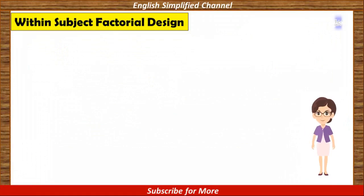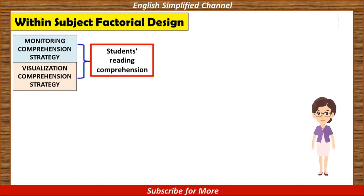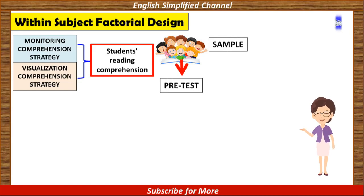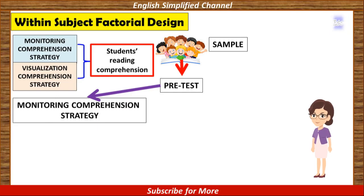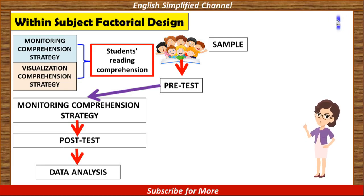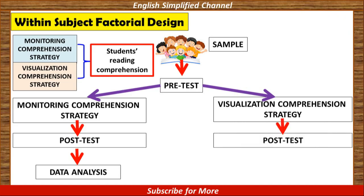Within-subject factorial design. Back to our example: there are two independent variables, namely monitoring comprehension strategy and visualization comprehension strategy. The first step is to test the students' reading comprehension before we give the treatment. After that, we give the first independent variable, teaching the sample by applying monitoring comprehension strategy. We then see the result by giving a post-test and analyze the data by comparing the means of the pre-test and post-test. Having done this, we continue to give the second independent variable, that is visualization comprehension strategy, and again prove whether it has a significant effect by giving a post-test and analyzing the data.